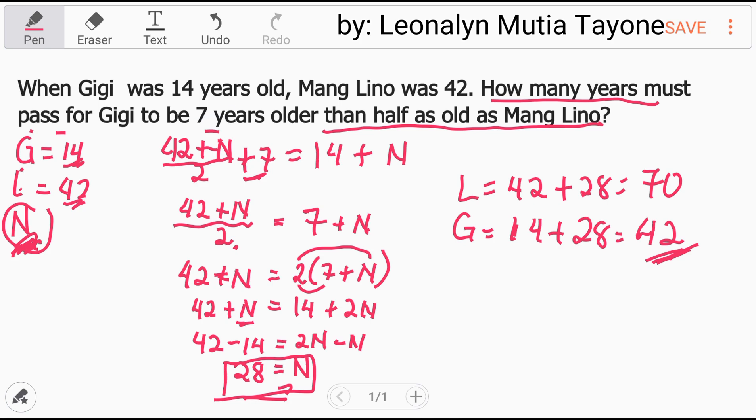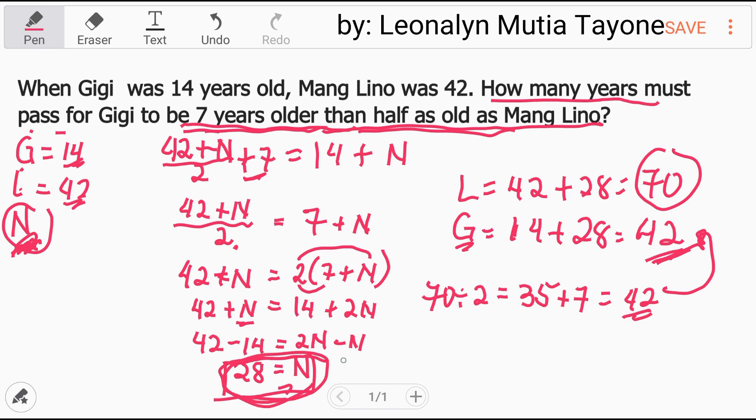After 28 years, Gigi will be 42 years old. Let's check if this 42 is 7 years older than half as old as Mang Lino. Mang Lino is 70. Divide by 2, that's 35. Now 7 years older - add 7 to 35, that's 42. Therefore it equals Gigi's age, so the answer 28 years is correct.